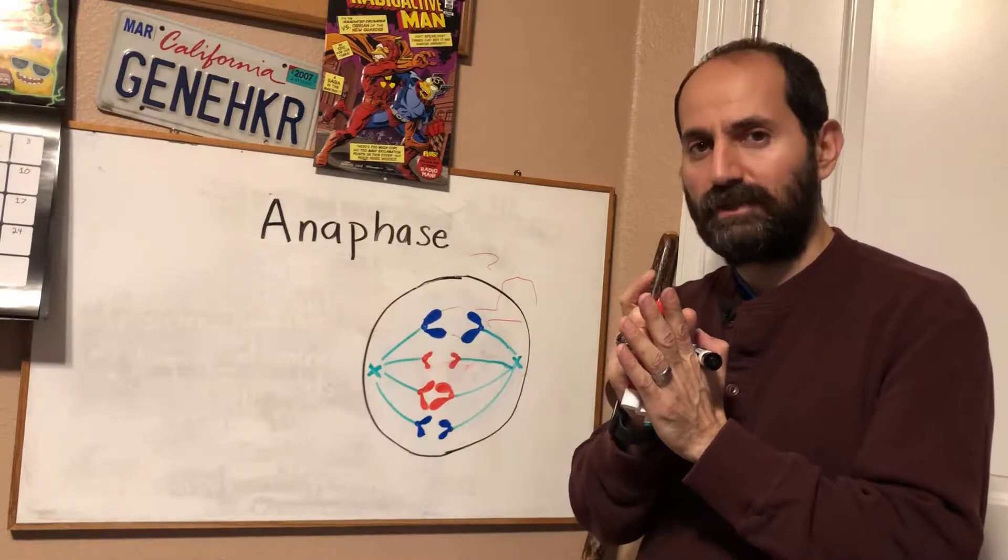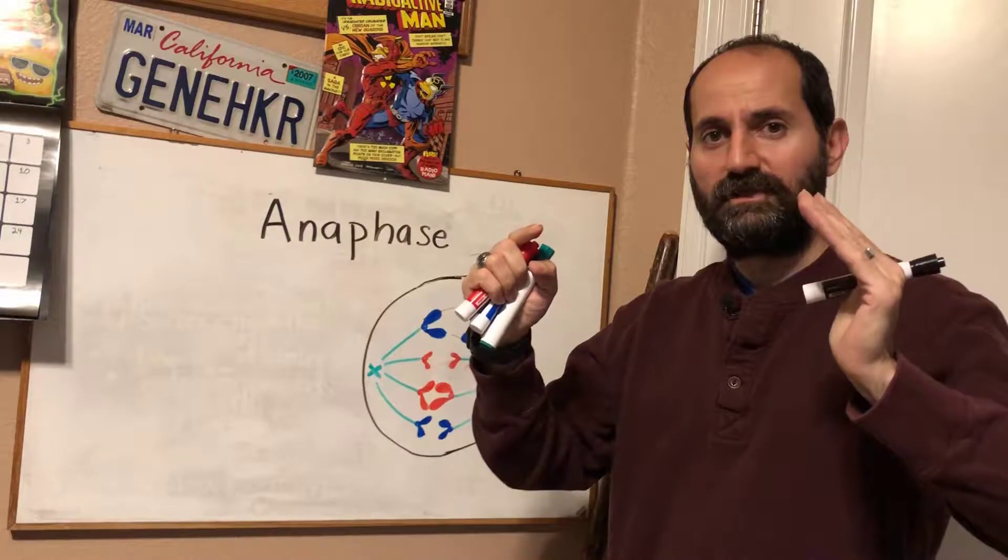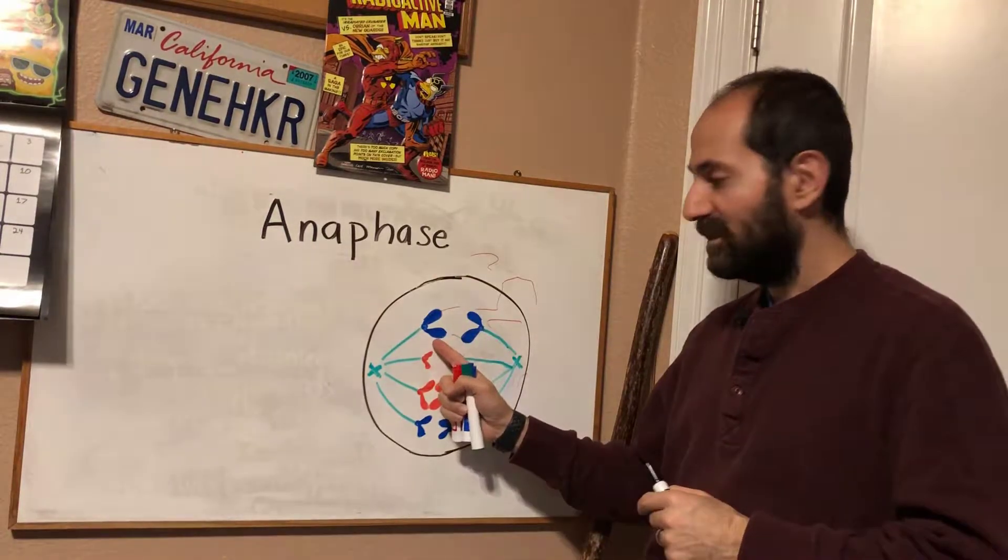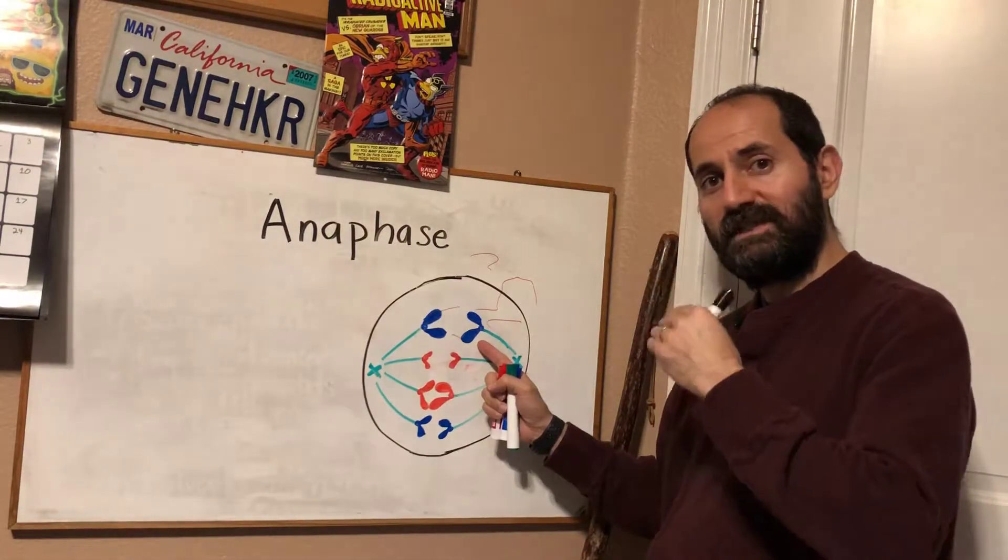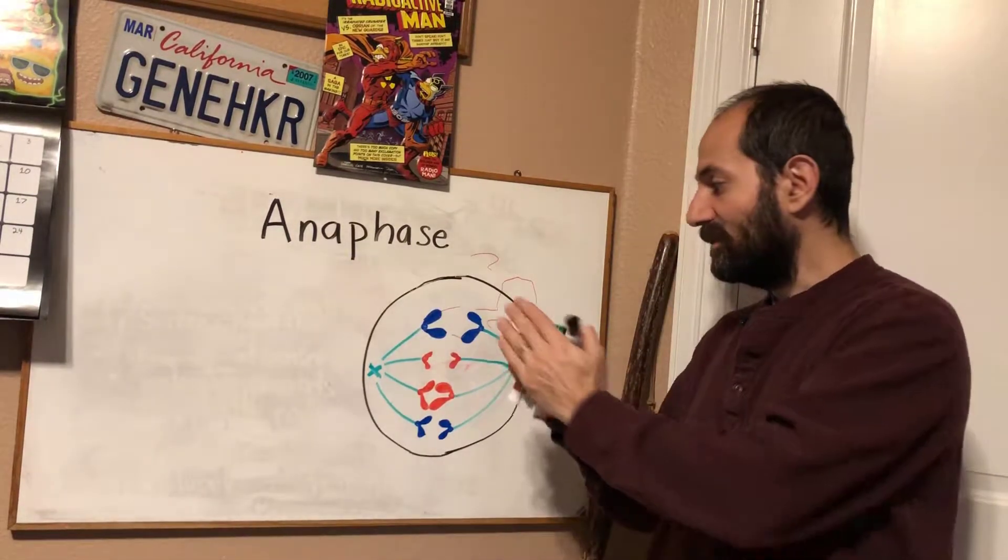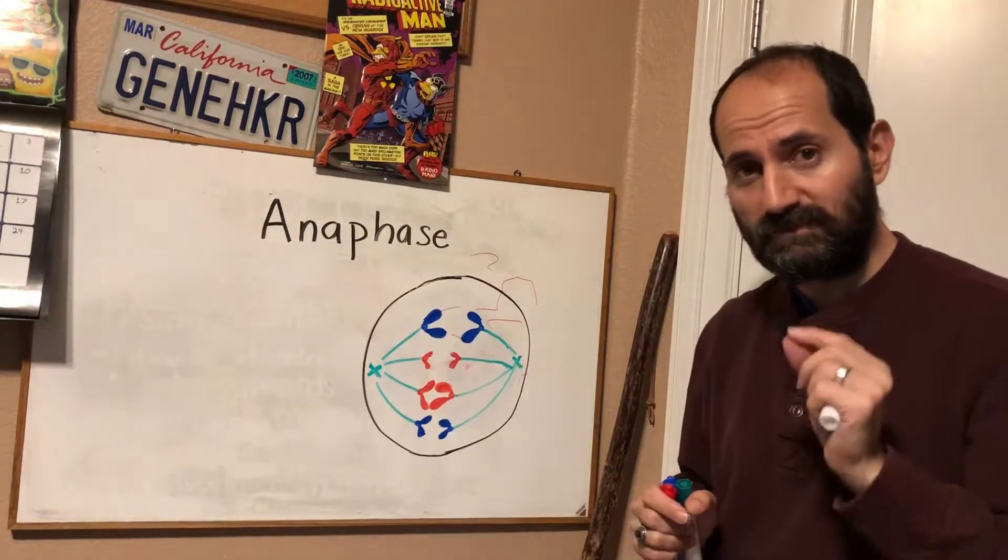Well, those cohesin proteins break apart and the sister chromatids are released from one another. Look what's happened. This sister chromatid has been released from its pair, from the other sister chromatid. And those sister chromatids are moving to opposite poles of the cell.